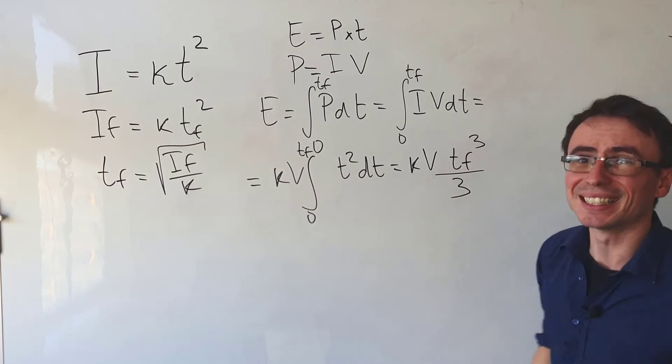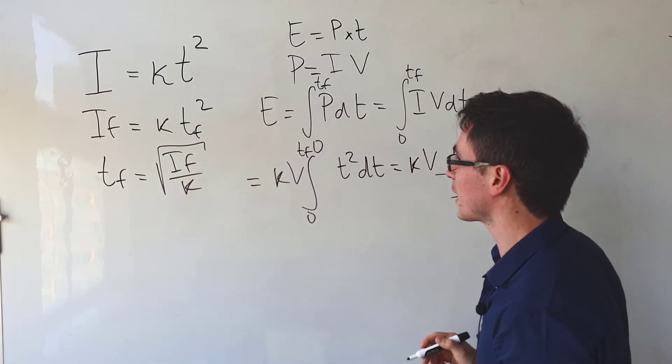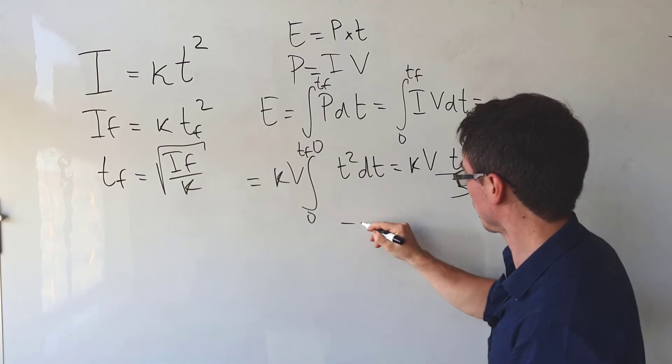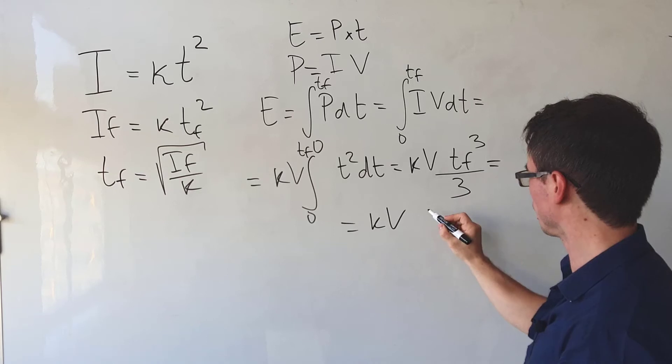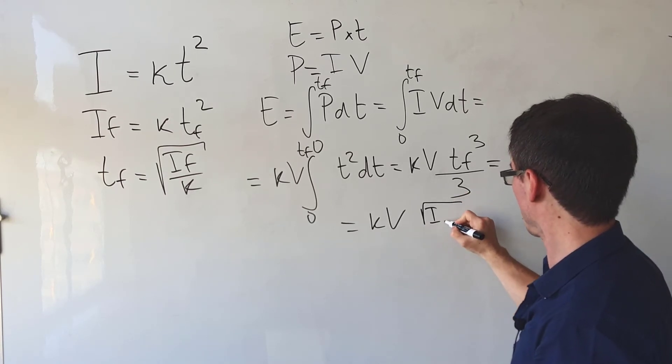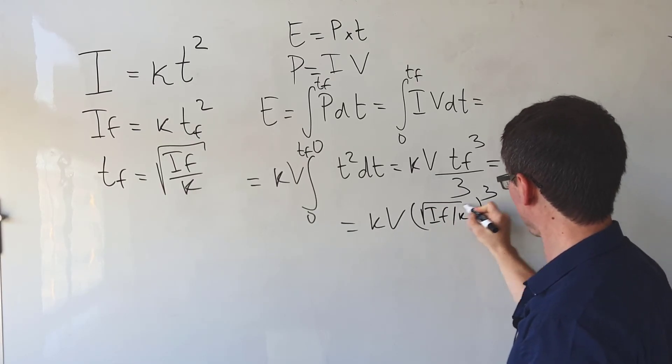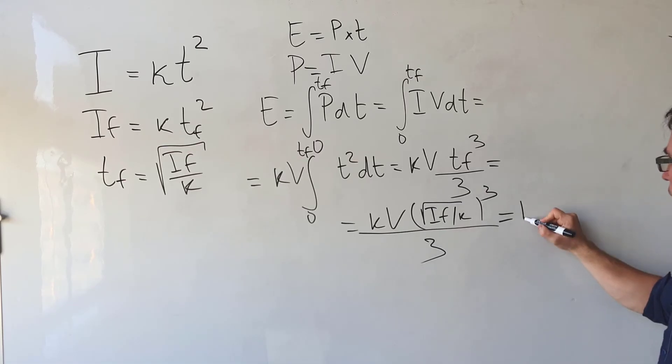But hang on a minute, tf is actually equal to this expression right over here and let's substitute that across here. What we're going to get is kv. Now tf is equal to the square root of if divided by k raised to the power of three divided by three.